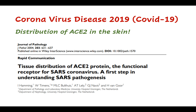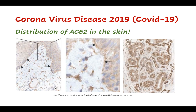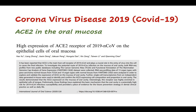A previously published study showed similar results but presented more details regarding ACE2 expression in the skin. In the skin, ACE2 is mainly expressed in the basal layer of the epidermis and in the basal layer of the hair follicles. It is also expressed in the endothelial cells of the blood vessels, in the fibroblasts and myofibroblasts, as well as in the eccrine sweat glands. ACE2 is also expressed in the oral mucosa, especially in the epithelial cells of the tongue.